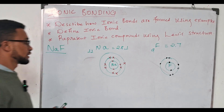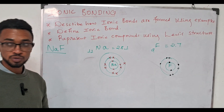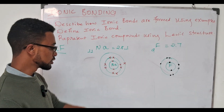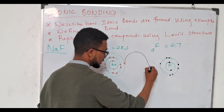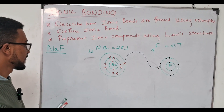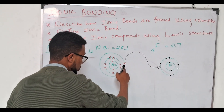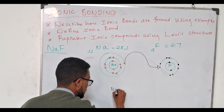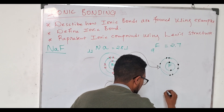In order to obey the octet rule and become stable, sodium will need to lose one electron to fluorine, and fluorine will need to gain one electron. Let's rewrite this — sodium has already lost one electron so its last shell will no longer be shown.